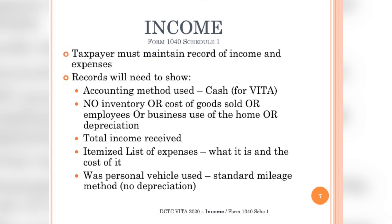The taxpayer is required to maintain their own self-employment records — documentation of income and expenses. For VITA purposes, taxpayer records must meet certain expectations: accounting must be cash-only, with no inventory or cost of goods sold, no employees, and no business use of the home or depreciation. Records need to show total income received, a total itemized list of expenses, and whether a personal vehicle was used to earn the self-employment income. This data transfers to Form 1040 Schedule C, which then transfers to Schedule 1, Line 3.